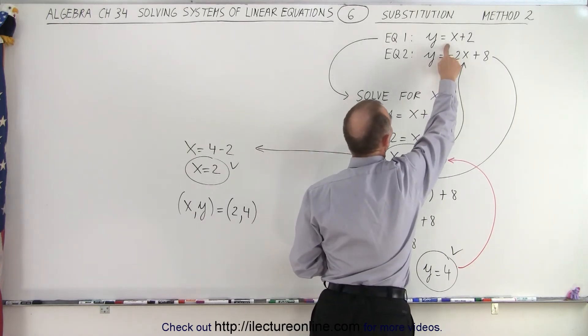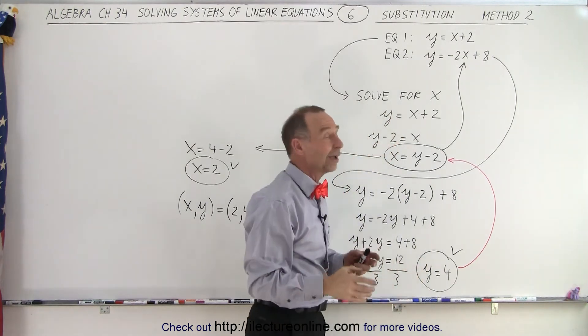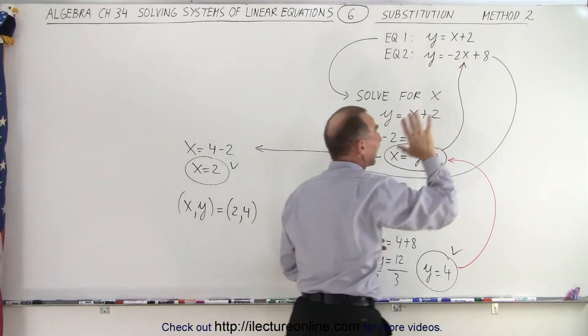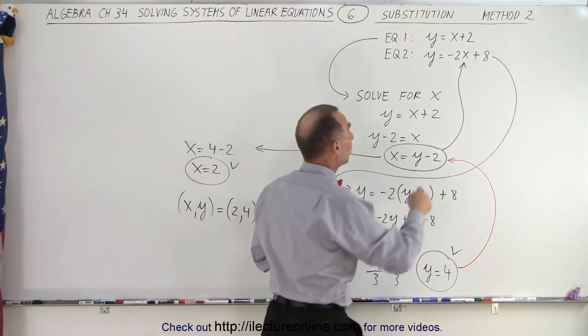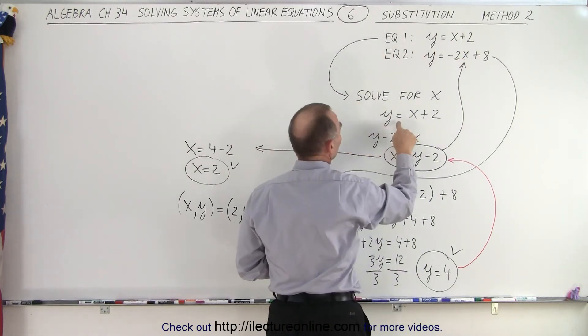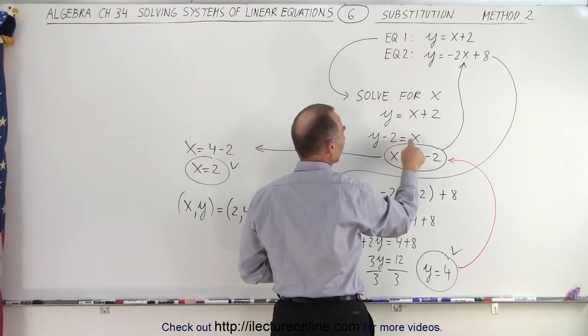You take one of the two equations and solve it for one of the variables. Now notice this is already solved for y, so we could have substituted y into here. But just to illustrate how it works in general, we take the first equation and solve it for x. So here we move the 2 to the other side. We get y minus 2 equals x.